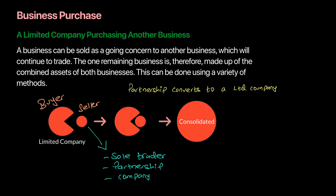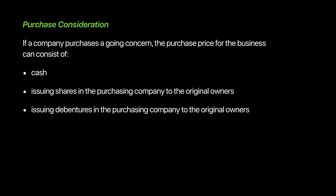The most important thing to discuss is the purchase consideration — the price that the buyer will pay to the seller. A company can buy another business using any of these sources: they can pay through cash or bank, they can issue shares to the owners of that business so they will own shares in the new consolidated company, or they can also issue debentures to the owners in return for selling off their business.